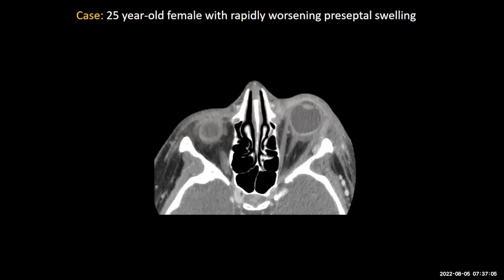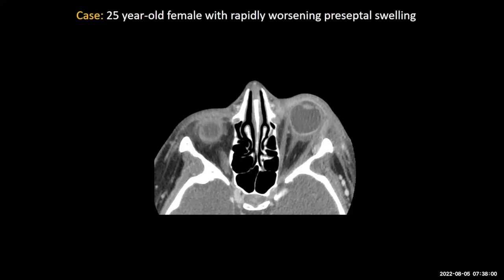Moving on to the orbits: a 25-year-old female with rapidly worsening preseptal swelling. Even the emergency physician can tell there's an orbital infection — they'll see prominent swelling of the left eye, possibly with swollen shut eyelids. The key is: is that infection extending posterior to the ocular globe? The preseptal space is defined by the orbital septa running along basically the eyelid. All periorbital soft tissues anterior to that are the preseptal region, and posterior to that is the postseptal region. You need to tell them if there's a postseptal infection, because they cannot determine that on clinical exam alone.